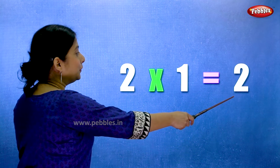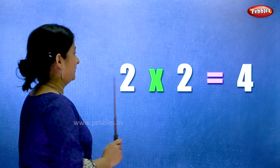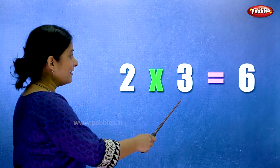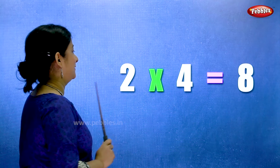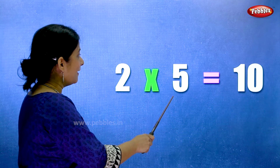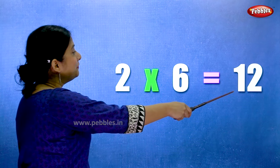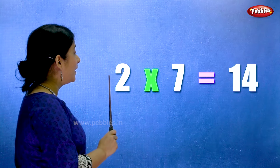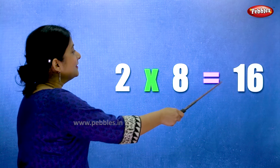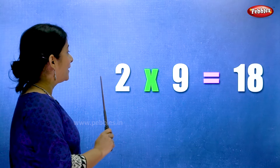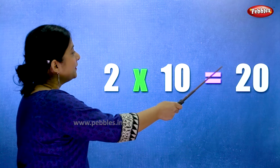2 ones are 2. 2 twos are 4. 2 threes are 6. 2 fours are 8. 2 fives are 10. 2 sixes are 12. 2 sevens are 14. 2 eights are 16. 2 nines are 18. 2 tens are 20.